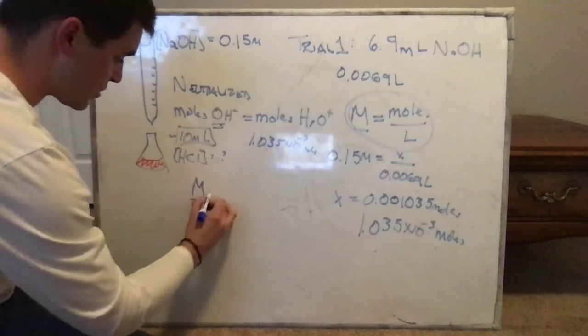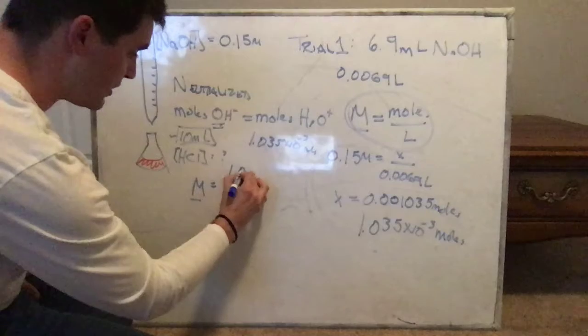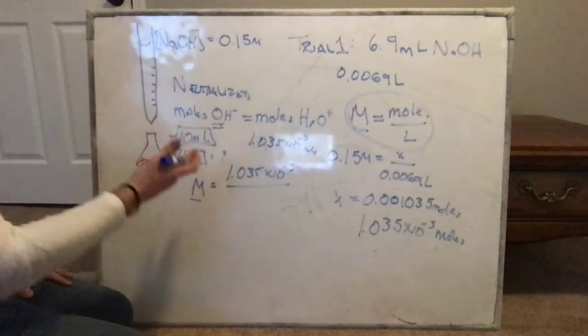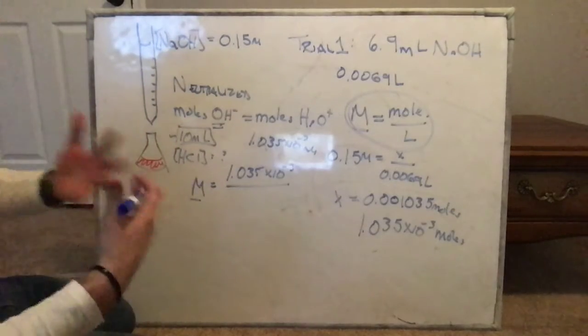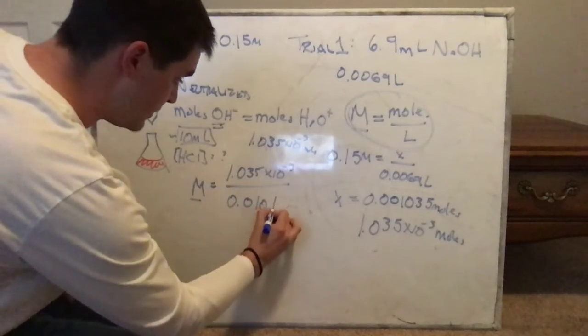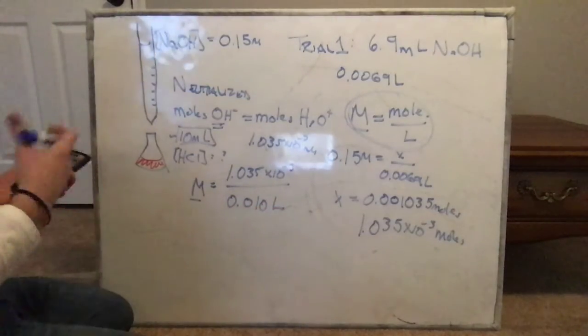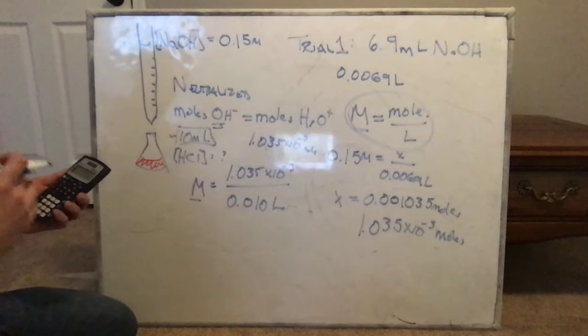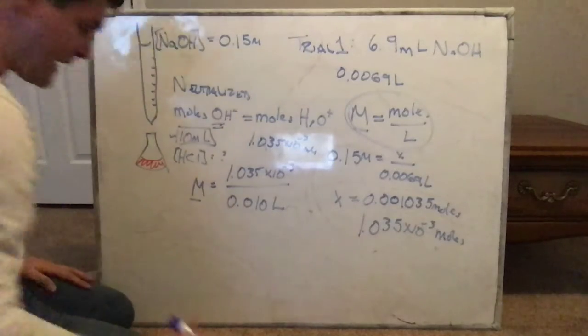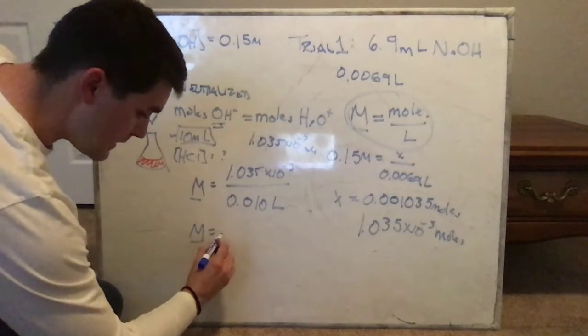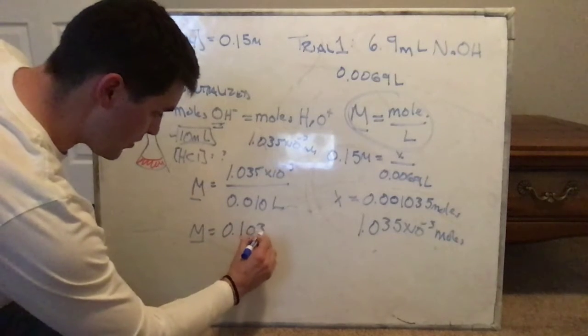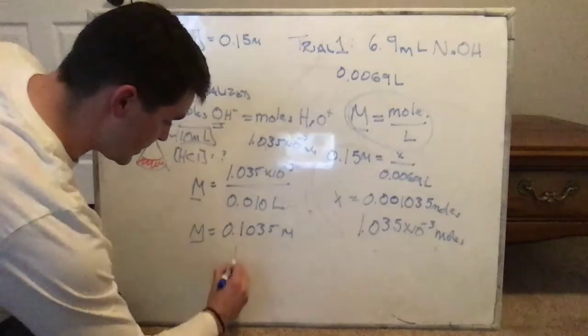So the unknown concentration is going to be equal to the number of moles, 1.035 times 10 to the negative three, divided by the number of liters. And again, 10 milliliters is not liters. So let's do that conversion real quick. 0.010 liters. So I'm just going to divide by basically 1,100. And when I do that, I find that my concentration is roughly 0.1035 molar HCl.